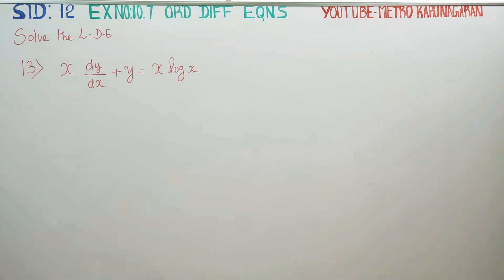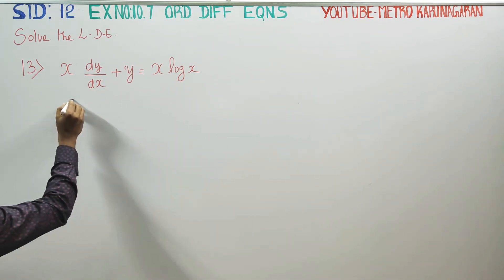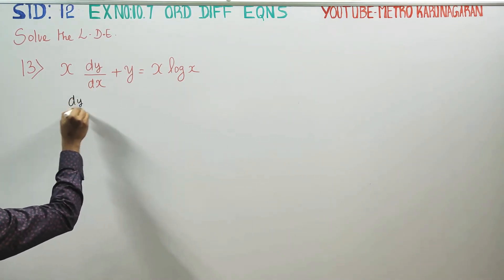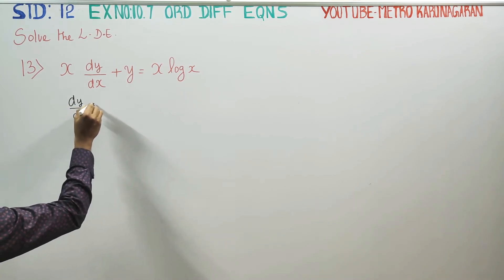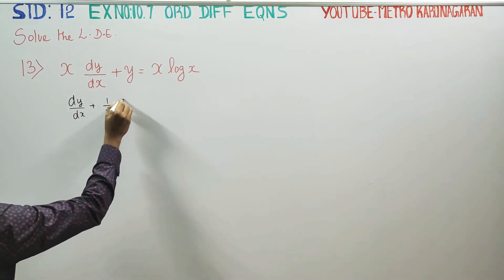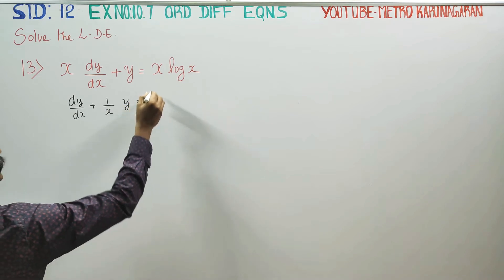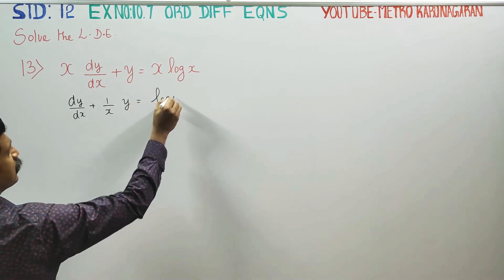First thing, for the linear differential equation, divide both sides by x. So dy by dx plus y by x, or 1 by x into y, is equal to x over x cancels, and you will get log x.